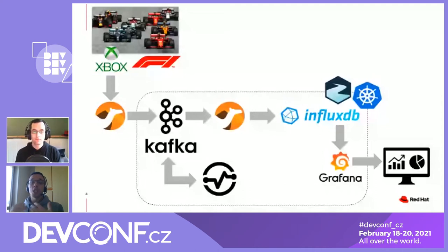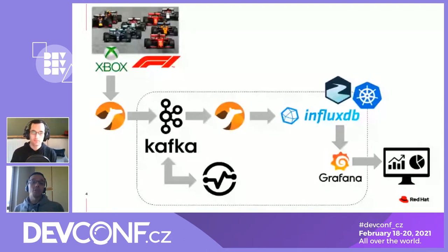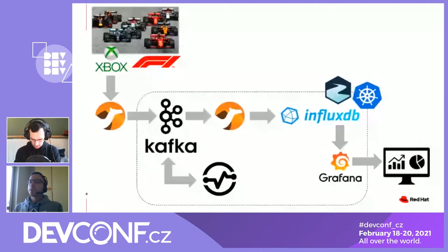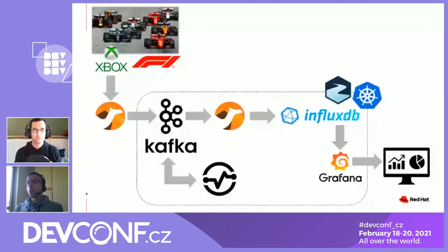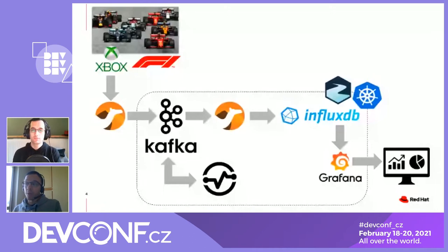We decided to use Apache Camel, an integration framework that lets you write applications using a DSL to describe what they call a route — the path your data follows. In this case, just reading from UDP and writing to Kafka topics in a really simple way. The next part of the pipeline runs a Kafka Streams API application for processing, and then finally another Camel application integrates Kafka with InfluxDB, writing data as points to use as a data source for Grafana dashboards.